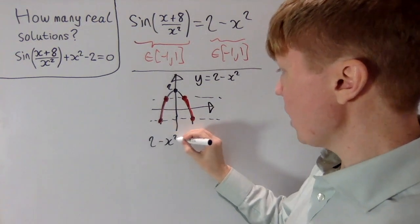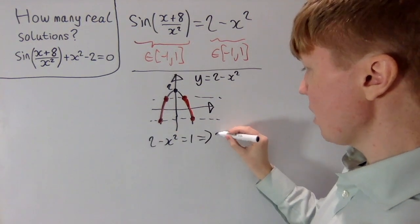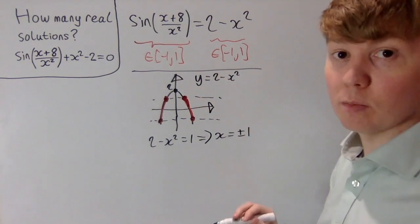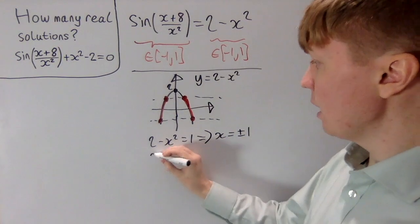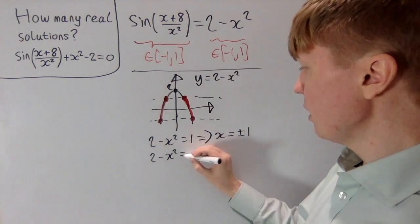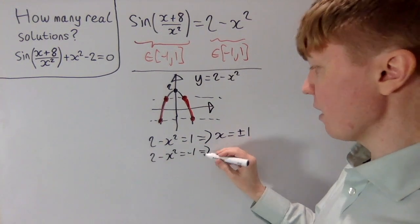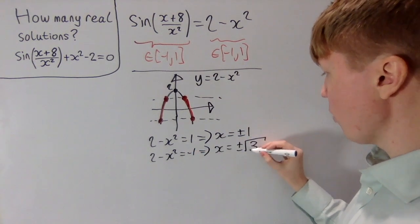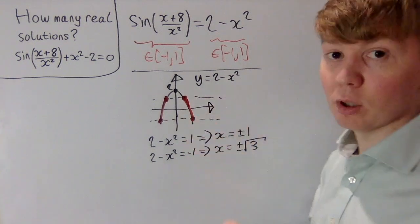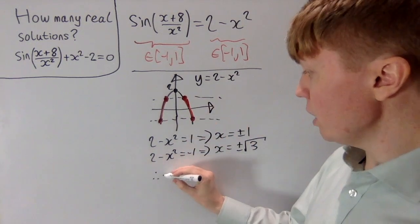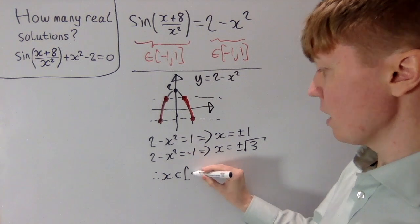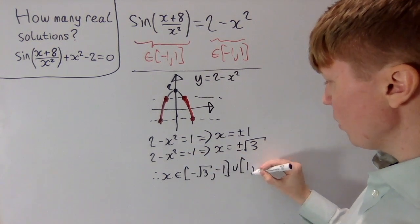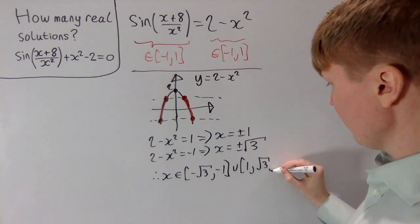From 2 minus x squared equals 1, we get x equals plus or minus 1, giving us those two boundary points. From 2 minus x squared equals minus 1, x squared equals 3, so x equals plus or minus root 3. The values of x we're interested in are between minus root 3 and minus 1, or between 1 and root 3.